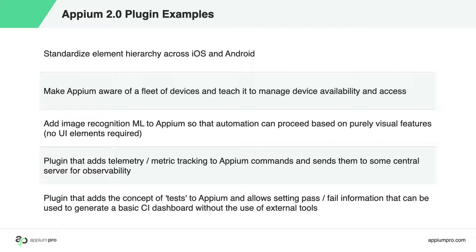Some early plugins that have already been written for Appium 2.0 include one that standardizes the element hierarchy across both iOS and Android, one that turns Appium into a device management service that knows which mobile devices are available for testing, and another that adds image recognition and processing capabilities to Appium.